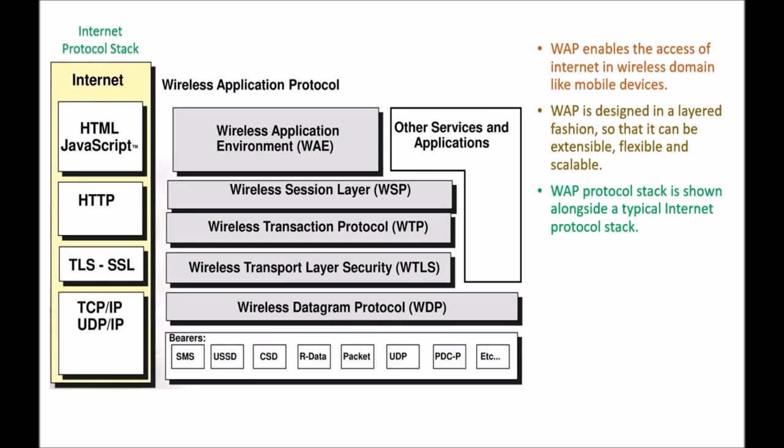WAP protocol stack is shown alongside a typical internet protocol stack. You can see that on the left hand side we are having an internet protocol stack which contains HTML, JavaScript, HTTP, TLS, SSL, TCP/IP, and UDP/IP.